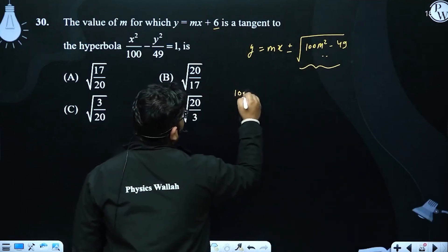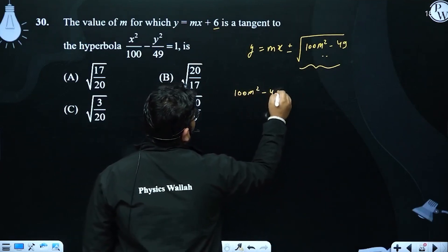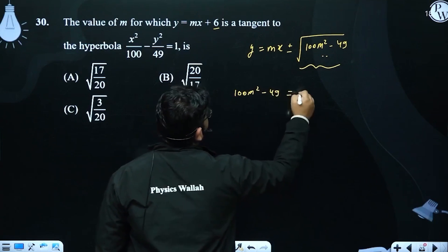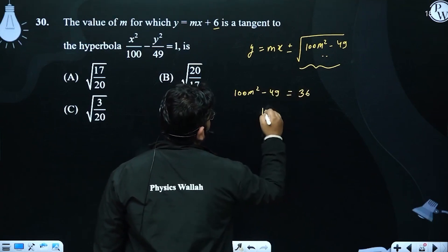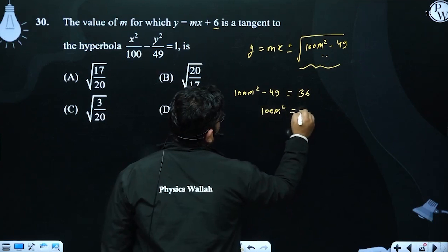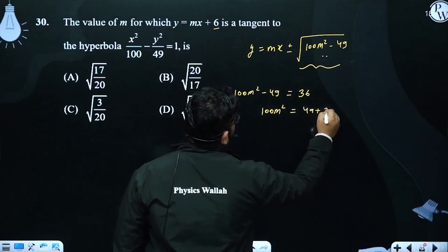Compare it. 100m square minus 49. How much will it be? 6 square, that is 36. So 100m square equals 49 plus 36.